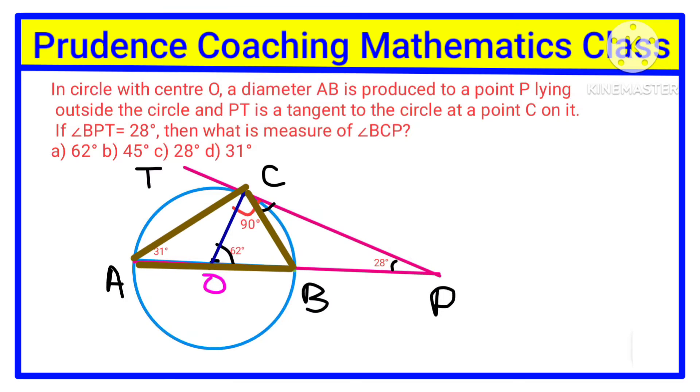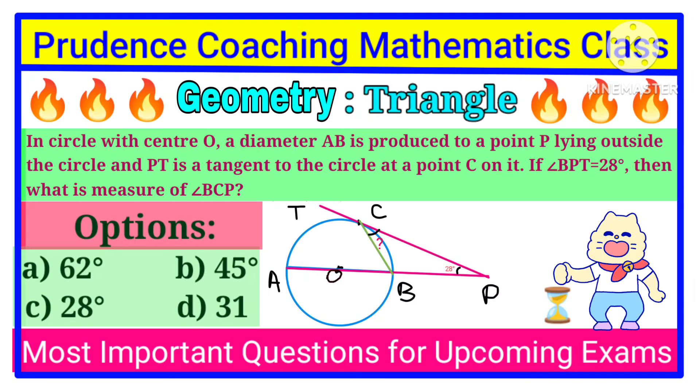If we consider triangle ABC, angle BCP is the alternate segment angle of angle BAC, and alternate segment angles are the same. That means angle CAB equals angle BCP. So our answer is 31 degrees, which is option number 2.